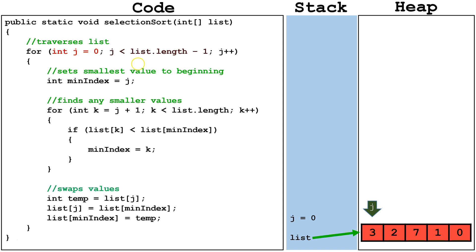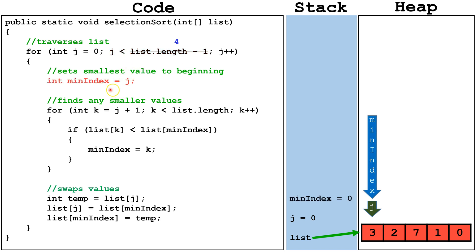Next, we'll check is j less than list.length-1. Since arrays don't change size, we can calculate list.length-1 as 4, and just leave that value there for the continued run of the program. We evaluate this to true so we can continue on through the outer for loop. We set min index equal to j. We always start by setting min index equal to the first index of the unsorted portion of the array.